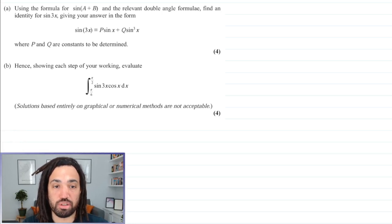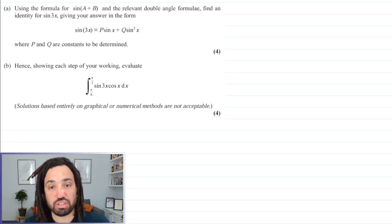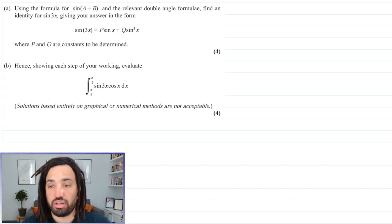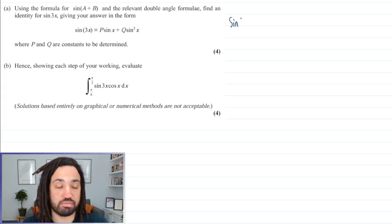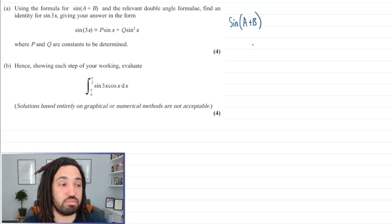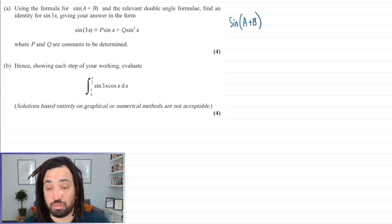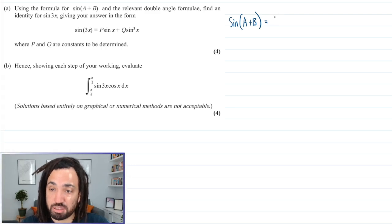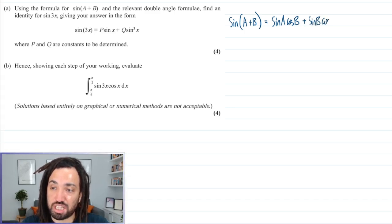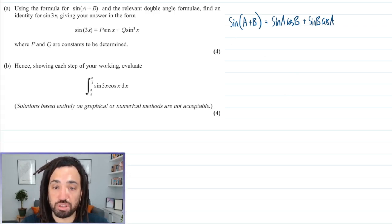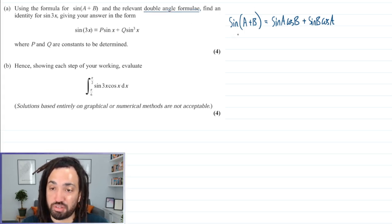Let's get into this one. Using the formula for sine A plus B and the relevant double angle formulae, find an identity for sine 3x, giving your answer in the form. So what I'm going to do first is derive the double angle formula. Sine A plus B is in your formula book, but the double angle formulas are not. Sine A plus B is sine A cos B plus sine B cos A — that's in your formula book — and we're going to need to use the double angle formulae as well.